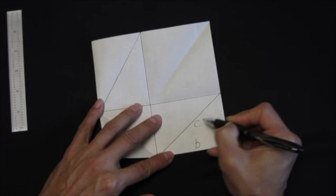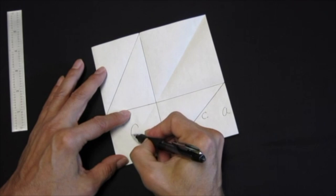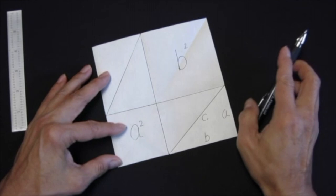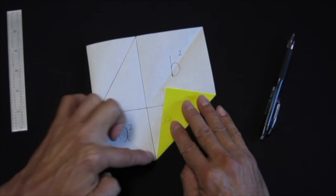The right triangle has side A and B and hypotenuse C. Because this length is A, this square has an area of A square. And then this area has area of B square. Now let's fold along the hypotenuse.